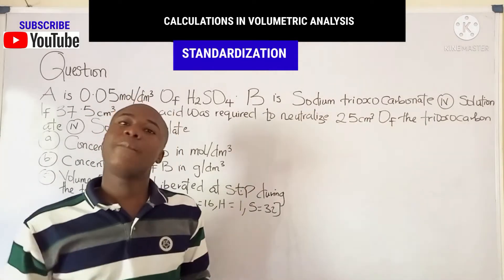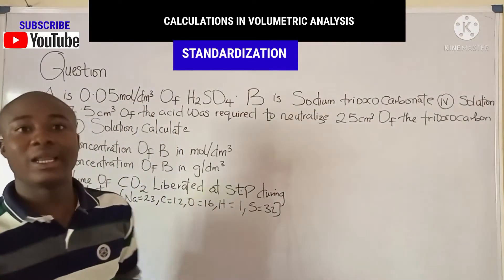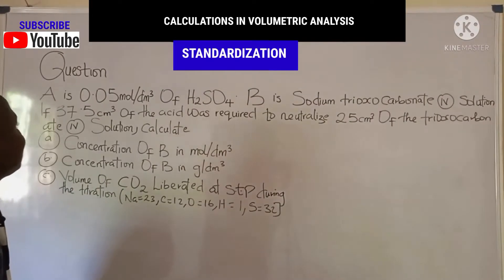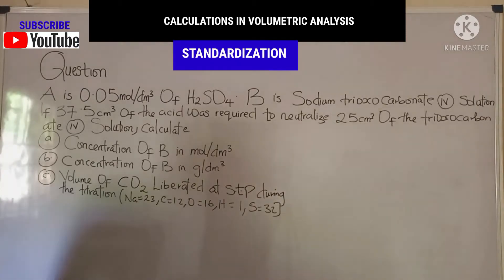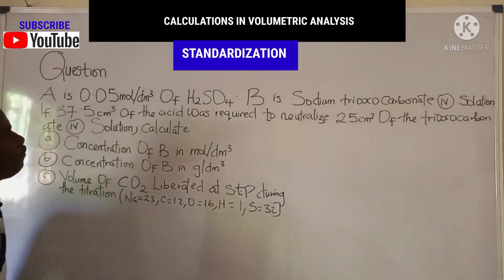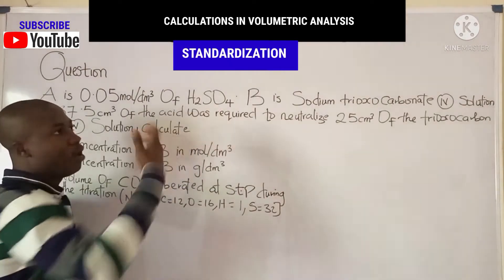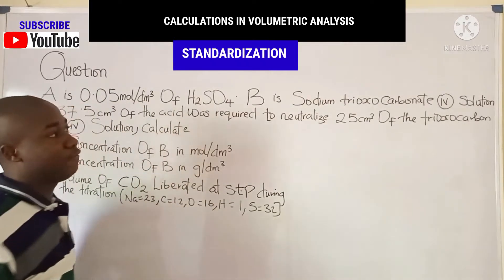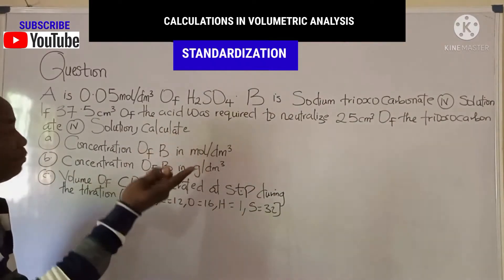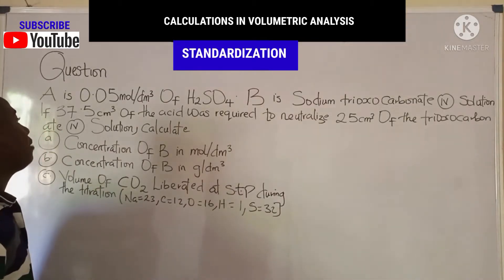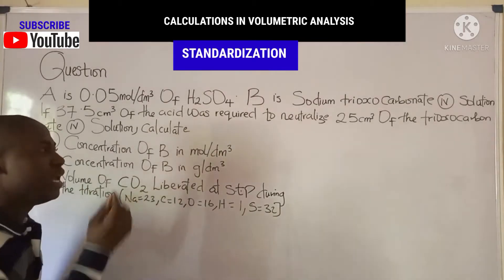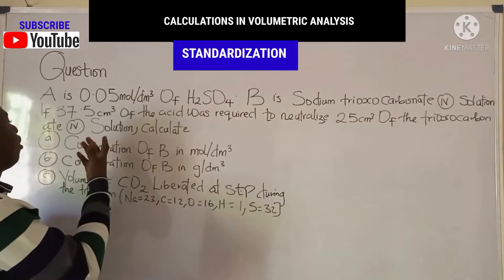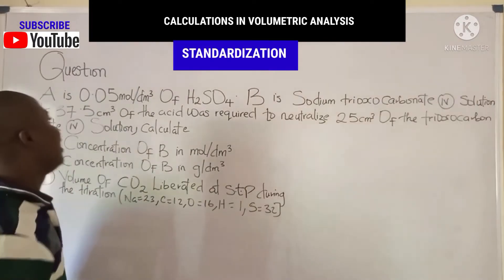Welcome back. In today's video I'll be solving this practice problem to understand the concept better. The question says A is 0.05 moles per dm³ of H₂SO₄, which is an acid. B is sodium trioxocarbonate(IV) solution, which is a base. 37.5 cm³ of the acid was required to neutralize 25 cm³ of the trioxocarbonate solution.